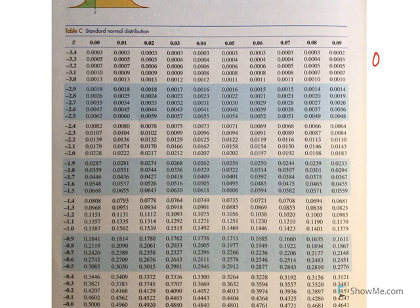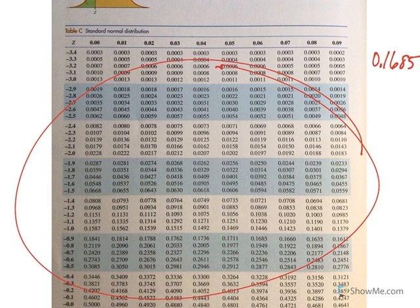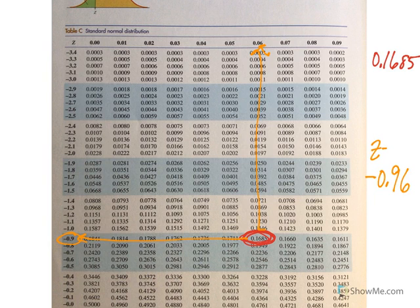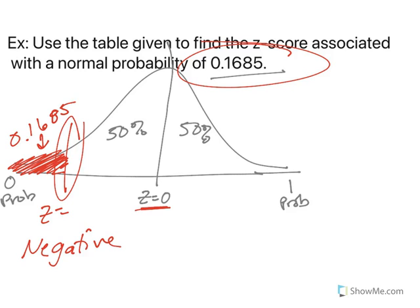So now let's go to our table. We have a probability of 0.1685. That means I'm looking inside the table. All of these values to find 0.1685. I look, here's 0.18, I'm getting closer. Look here, 0.1685 is right here. I go left and up. So this is the beginning, I have negative 0.9, and then this is the last number, 6. So my z-score is negative 0.96.